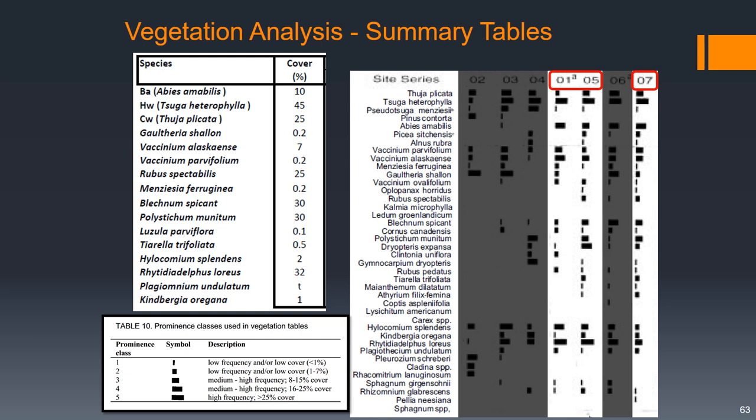We've got our table with our plant cover by species, and then down at the bottom, table 10 shows the key for the symbols in the vegetation table related to frequency.